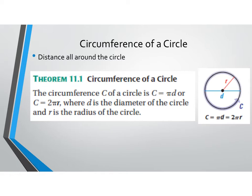It doesn't matter the order you multiply. So on the formula with radius, if you'd rather multiply the radius times 2 and then put pi, you can do that. Because on questions where it asks you to leave it in terms of pi, they're going to put the 2 times r first and then pi at the end. That's how I'm going to write my answers.